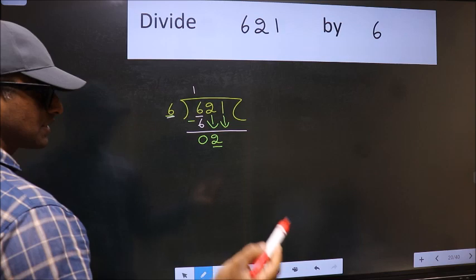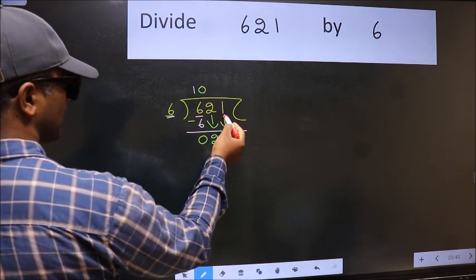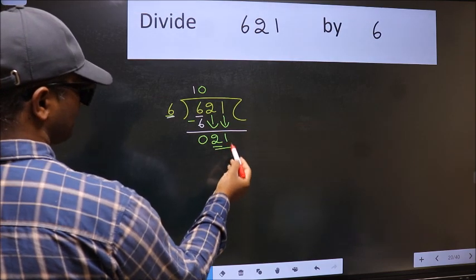And the rule to bring down the second number is we should put 0 here. Then only we can bring this number down. Now 21.